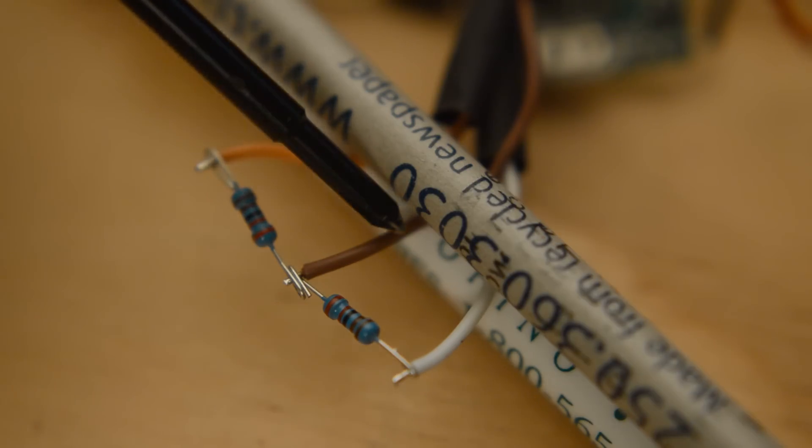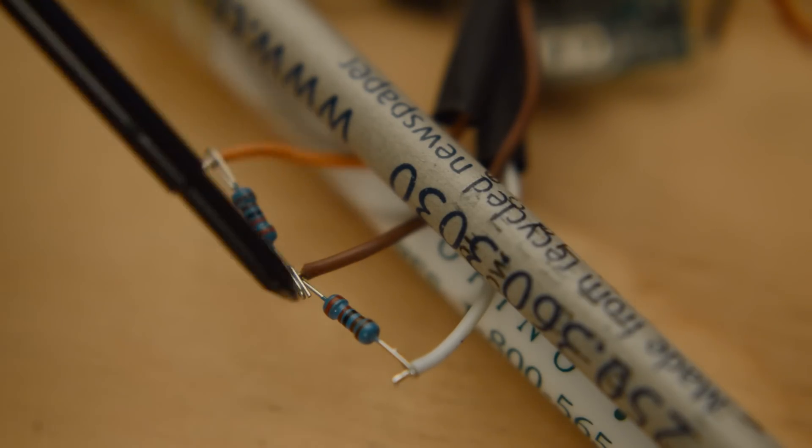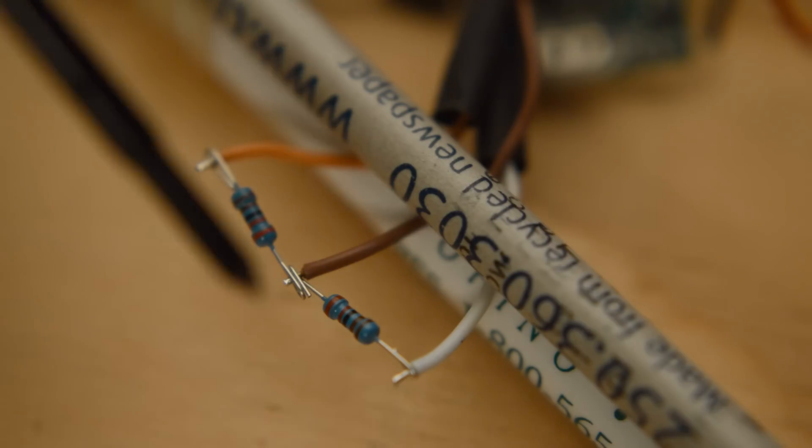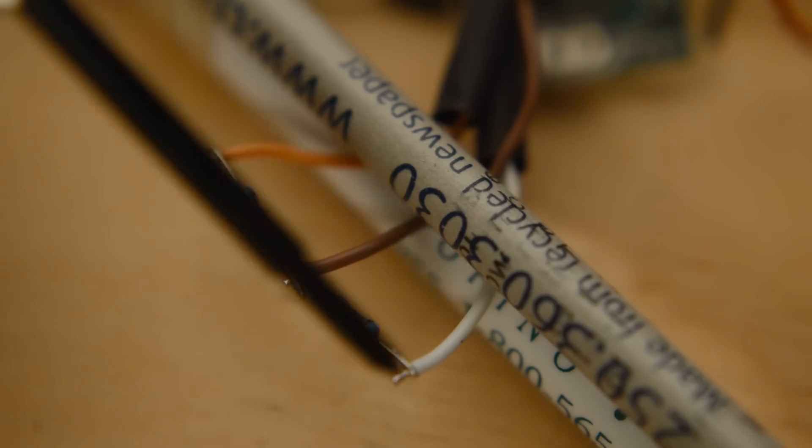To wire up my voltage divider, I'm going to take that brown wire I noted earlier and throw it between two 2.2 kilohm resistors. And in total that's 4.4 kilohms across the entire thing. I've thrown my other two wires on either side of that.